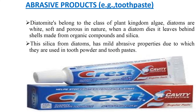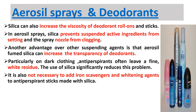The silica from diatoms has mild abrasive properties, due to which it is used in toothpaste and tooth powder, aerosil sprays, and deodorants. Silica can also increase the viscosity of deodorant roll-ons and sticks. In aerosil sprays, silica prevents suspended active ingredients from settling and the spray nozzle from clogging.